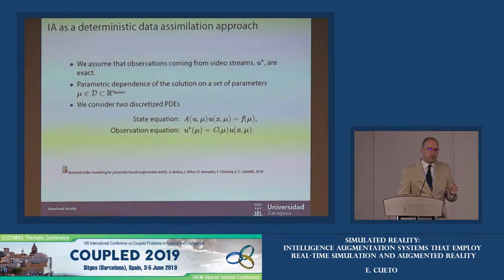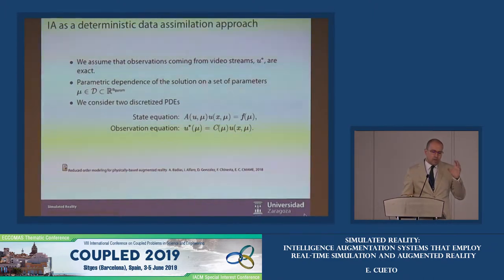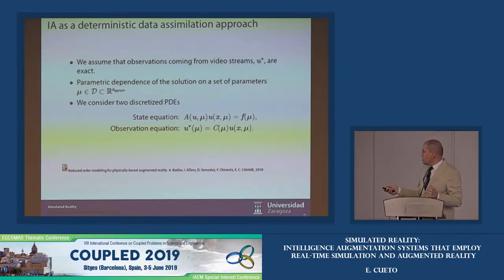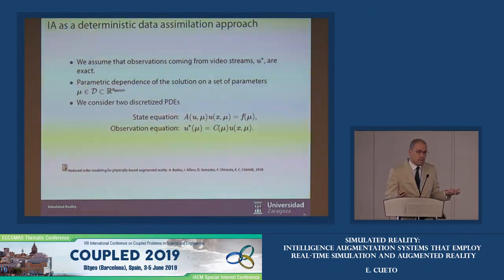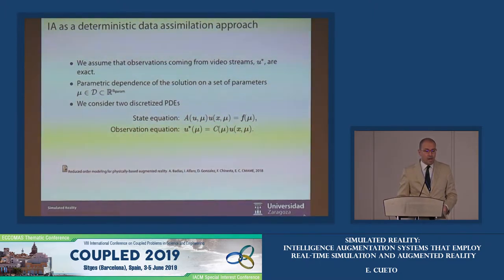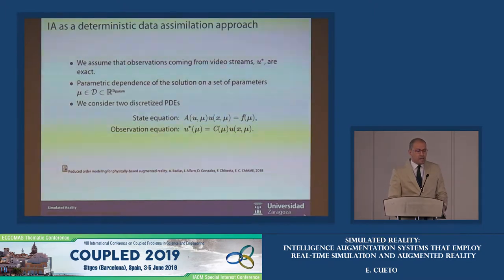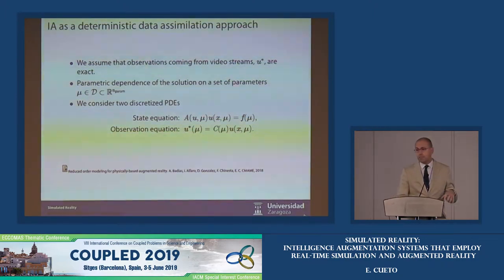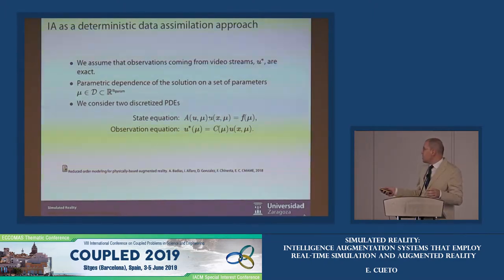Our approach assumes a parametric dependence of the solution on some set of parameters μ, and we describe the problem as a set of two different PDEs. One is the so-called state equation — a matrix that depends nonlinearly on u, your solution (say the displacement field), and on the set of parameters — and the solution depends on the physical position x and the set of parameters μ. The second equation is the observation equation: U*, the information extracted from the video, is the product of a matrix that depends on the intrinsic parameters of the camera and possibly on the parameters and the solution.